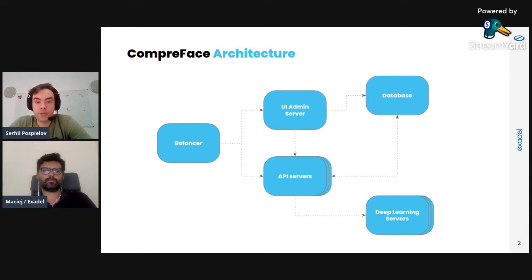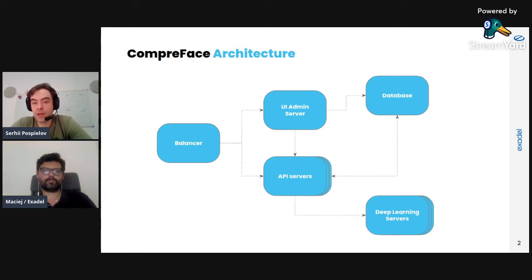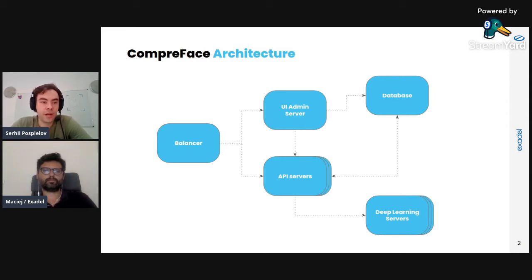When you finish setting up your environment, you can use API keys to send requests to the API servers. The API servers use the saved information to actually do the face recognition and for classifying faces. We also have deep learning servers to run neural networks that calculate the embeddings of the face. On top of all of this, we have balancers that send all of the requests to the appropriate servers. You can use any balancer you want, but in our default configuration we use the Nginx server.